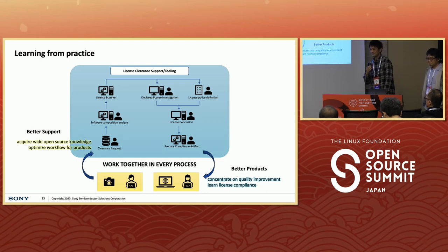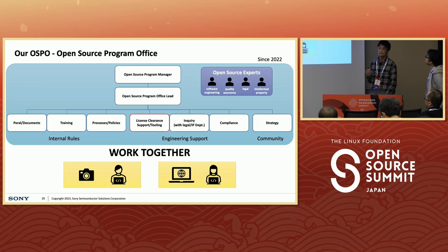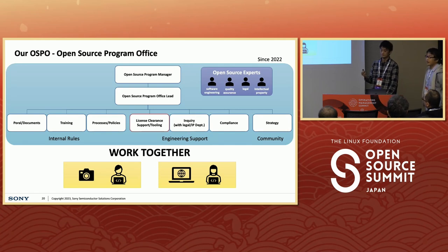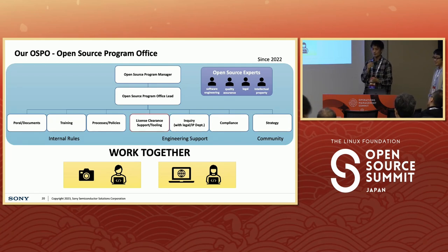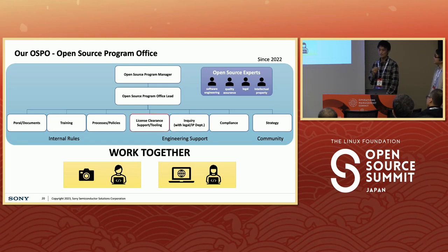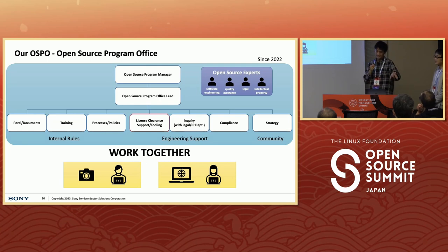My last question: in this illustration of the OSPO structure, I couldn't find the security teams. Do you have any collaboration with the security or security assurance team? Yes, of course. We have another security team outside this figure, but we communicate every day about how we should handle vulnerabilities of OSS components. I think we should add another box here. The security team is not included in OSPO — they're just security as-is. Actually, both, because we are in the same section. The security team and OSPO team are in the same section, so we do the same for open source security.